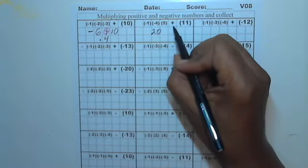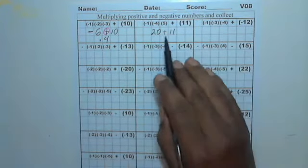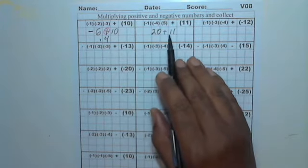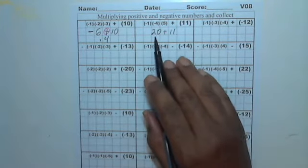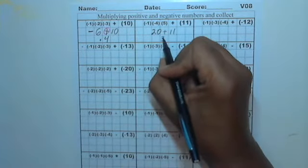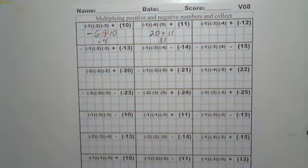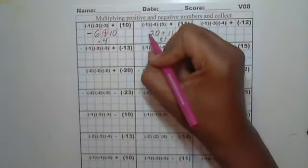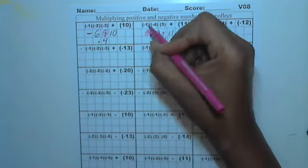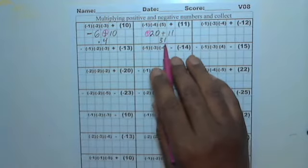We're going to bring down the plus and the 11. These are the same signs. Same signs we'll add, so we'll add these and get 31. The bigger sign is going to win. The 20 is the bigger sign and it is positive, so therefore the 31 will be positive.